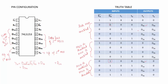Similarly for D1A, EB bar is 0 in one row and 1 in another, so it is don't care. The expression is EA · S1̄ · S0. For D2A it will be EA · S1 · S0̄.